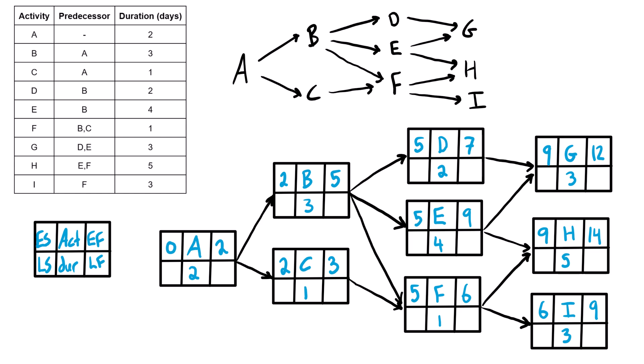Now we find ourselves with three finishing activities — G, H, and I — all with different early finishes. We take the largest, which is fourteen, and set that as the late finish for all finishing activities. So fourteen goes into the late finish of H, G, and I. Working the backward pass, we subtract each activity's duration from its late finish to get the late start: fourteen minus three is eleven for G, fourteen minus five is nine for H, and fourteen minus three is eleven for I.